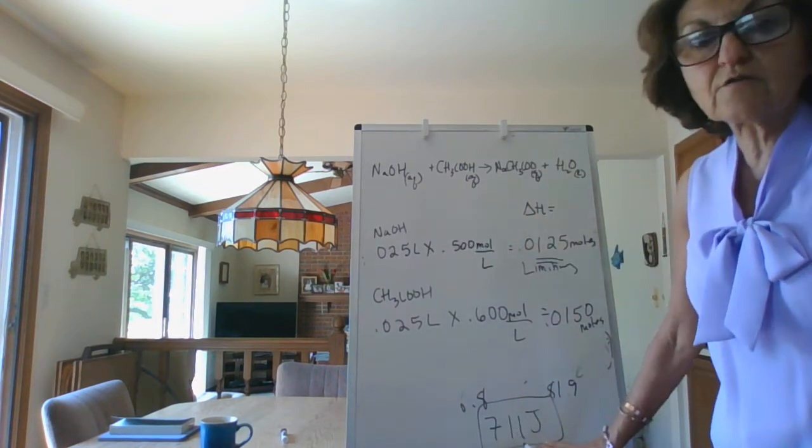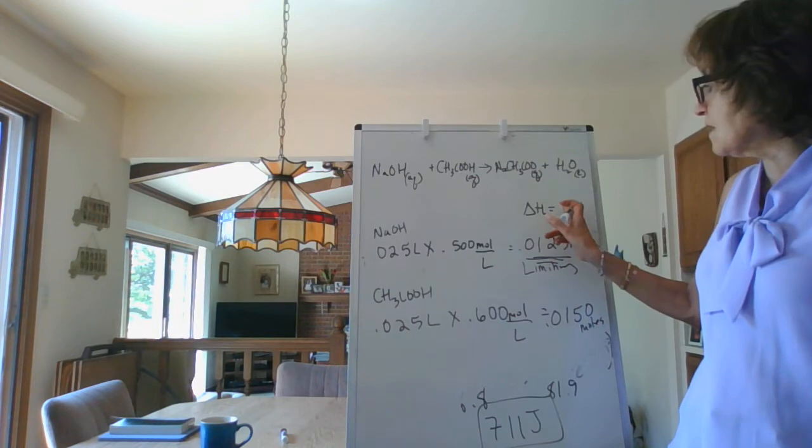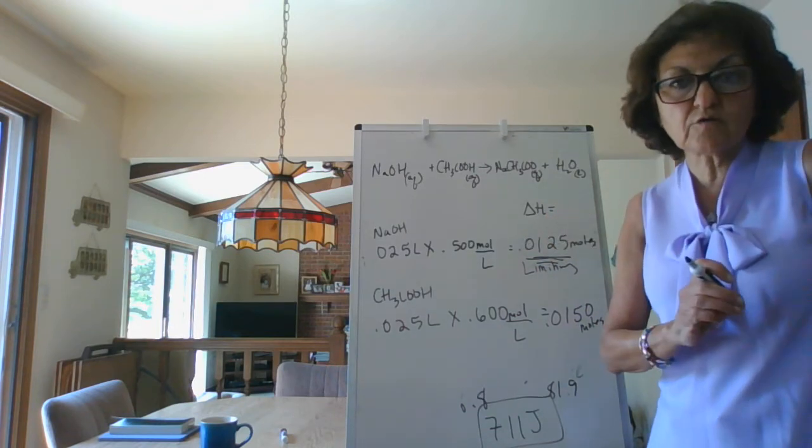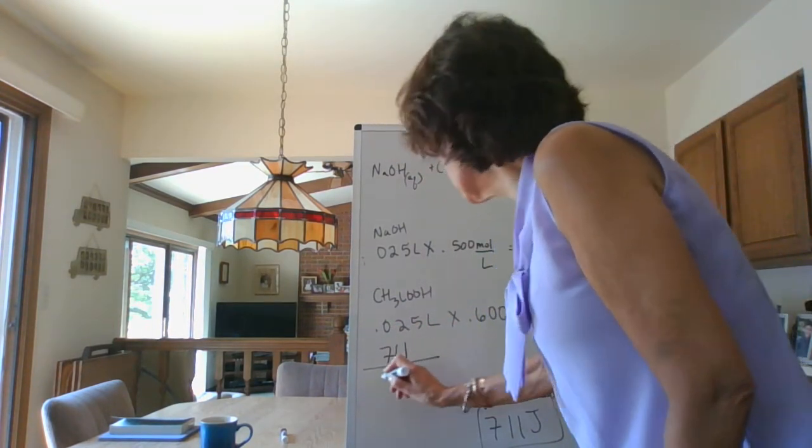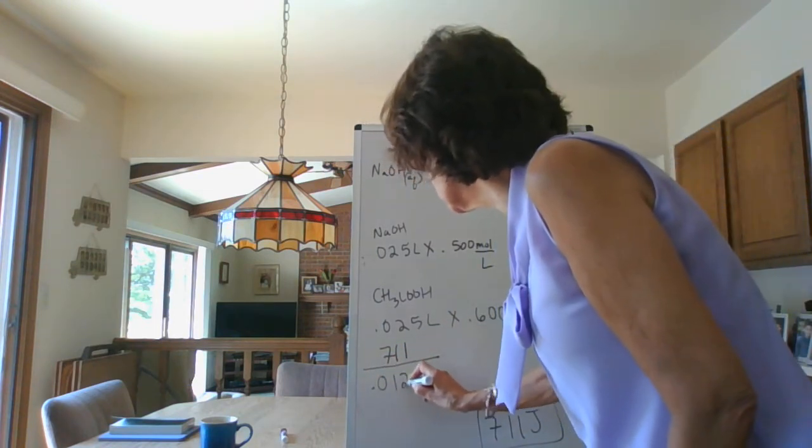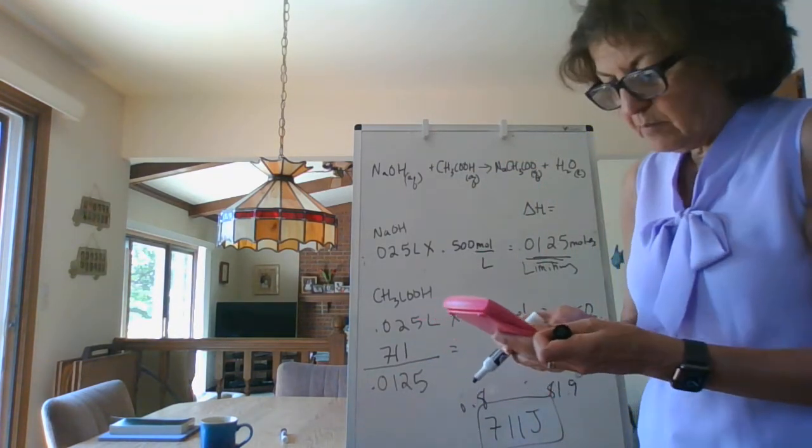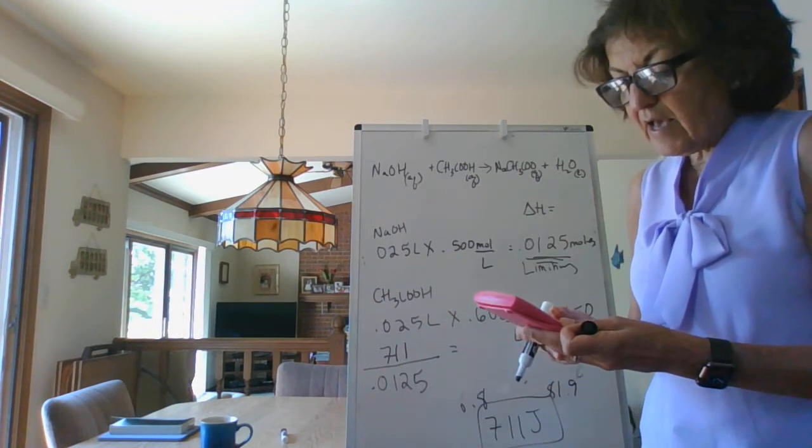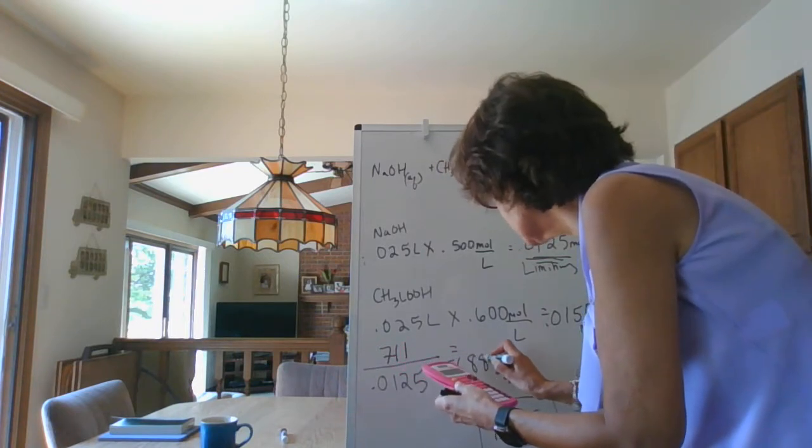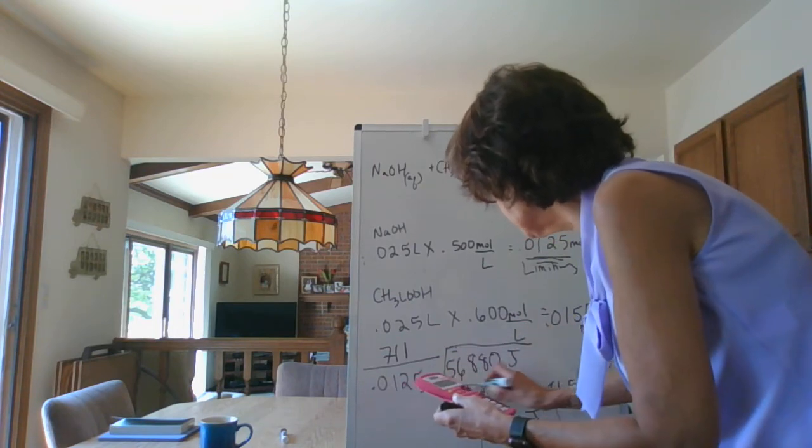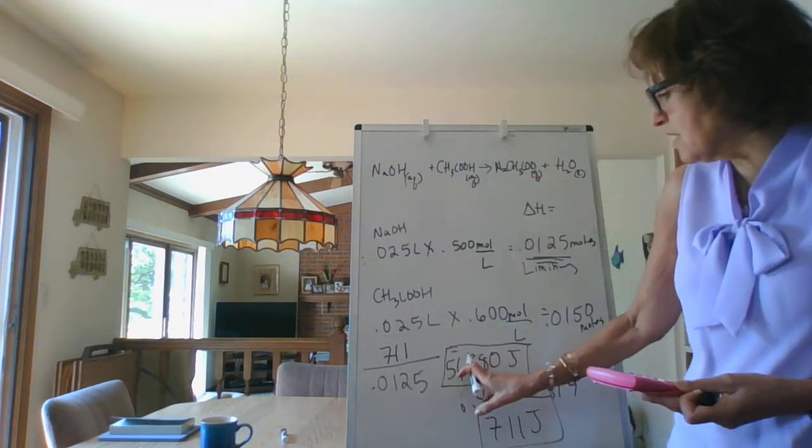In order to figure out this value, you take your 711 and divide it by the least number of moles. That's the step so that you can get this value, that's your molar heat of neutralization. I'm going to take that 711 divided by the limiting moles, 0.0125. Let's see what we get: 711 divided by 0.0125, and you're going to get a big number, so it's going to be 56,880 joules.